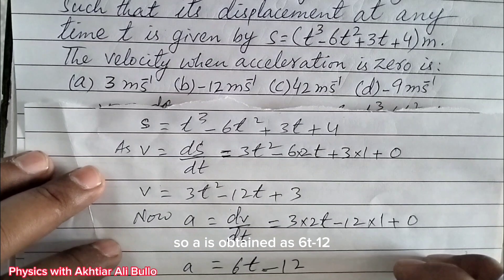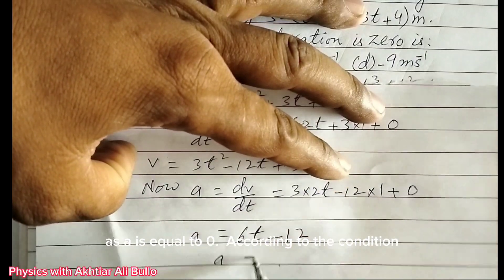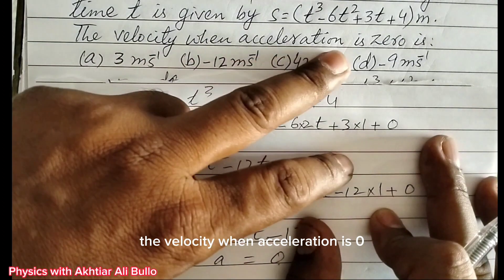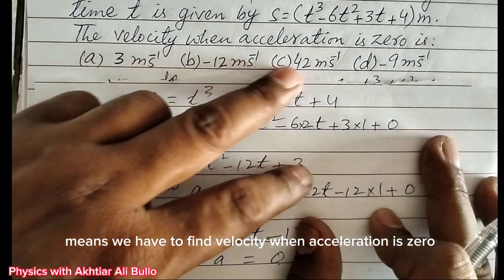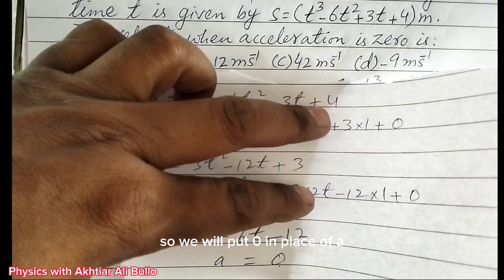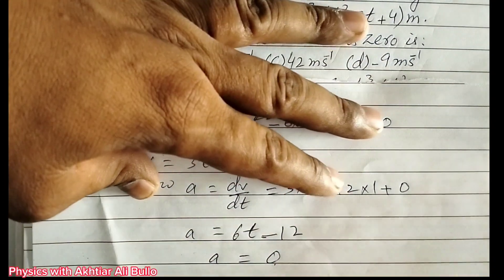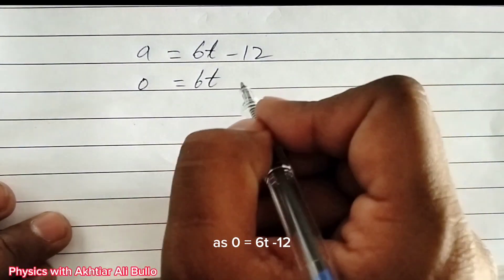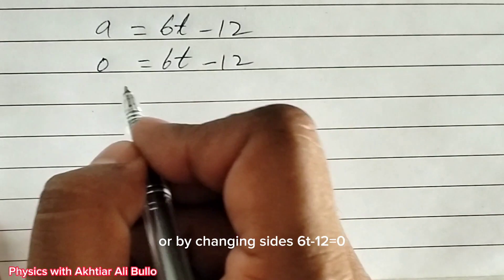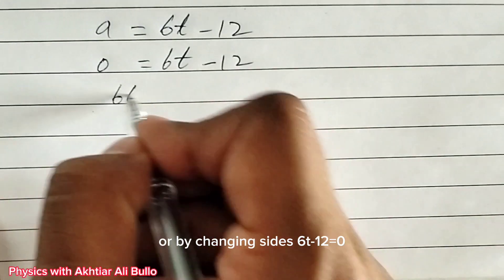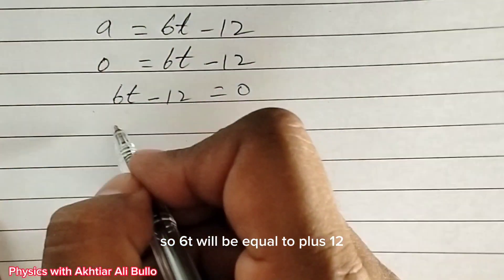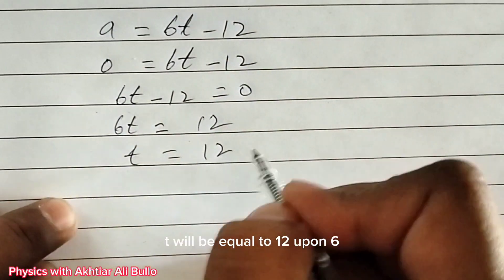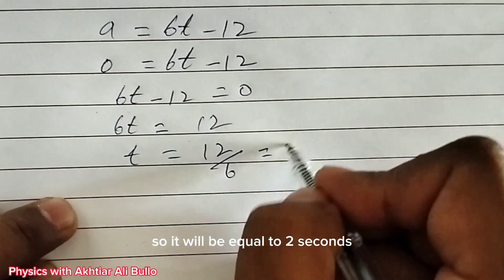a is obtained as 6t - 12. According to the condition, we need to find the velocity when acceleration is zero. So we put a = 0: 0 = 6t - 12, which gives 6t = 12, therefore t = 12/6 = 2 seconds.